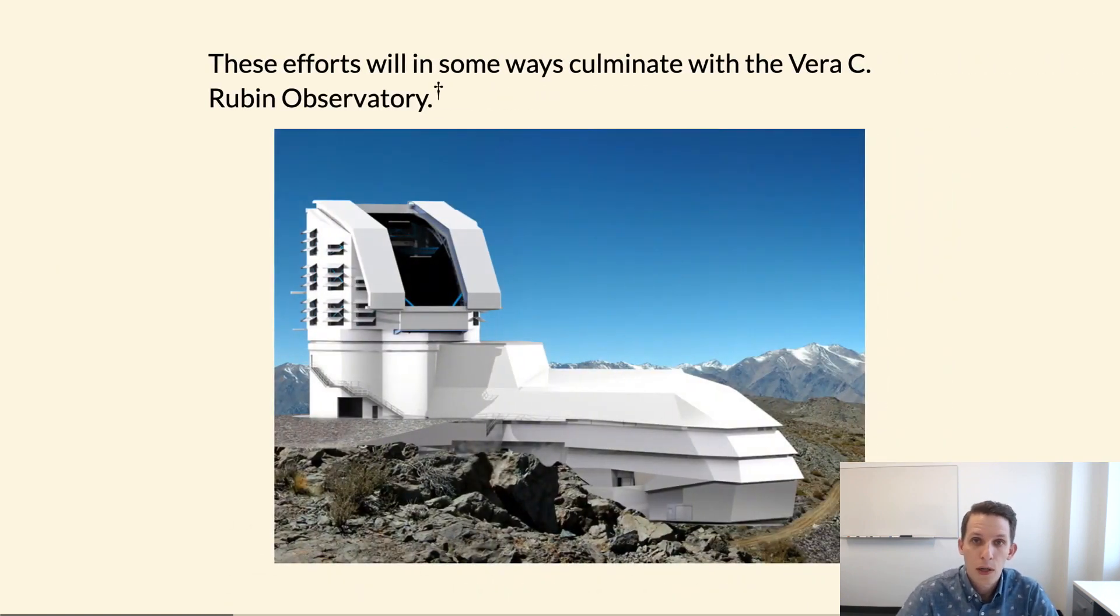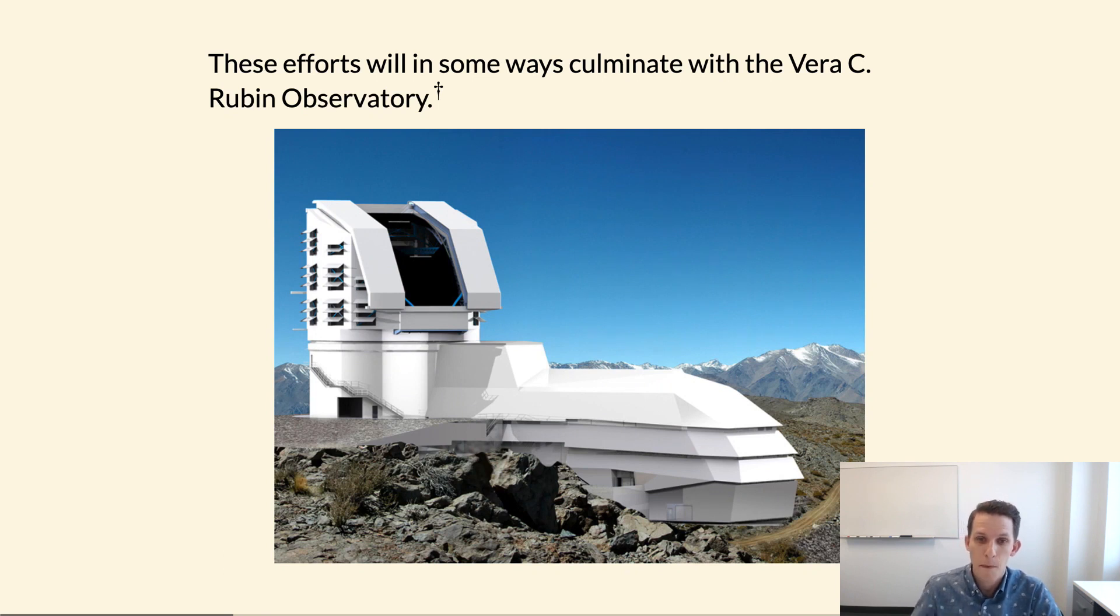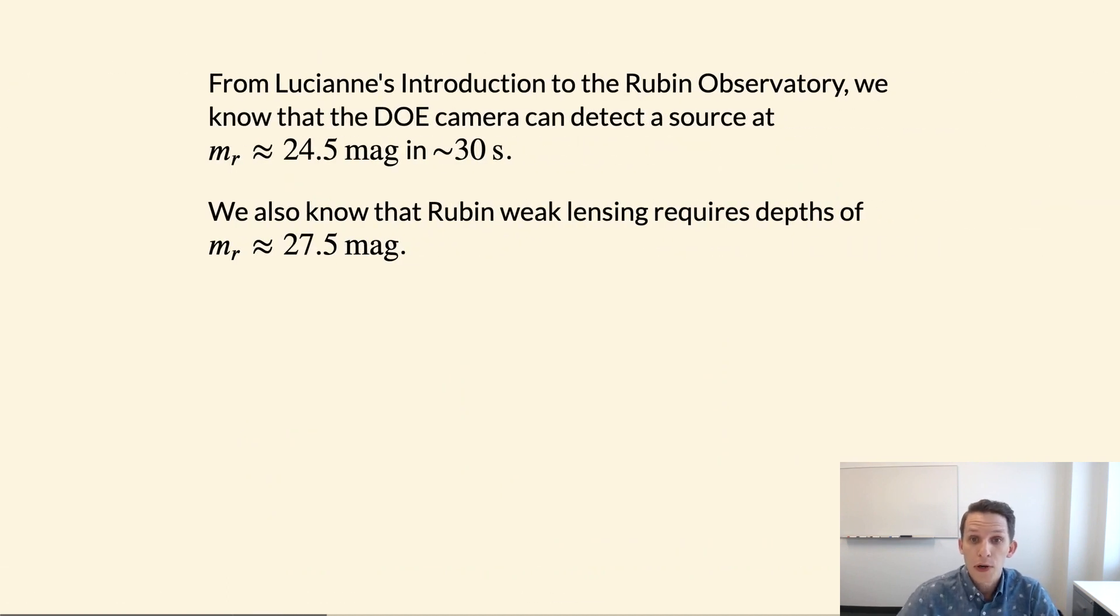All of these efforts will in some ways culminate in the next few years with the onset of the Vera C. Rubin Observatory and its Legacy Survey of Space and Time, or LSST. From Lucianne's introduction to the Rubin Observatory talk, we know that the LSST DOE camera can detect a source at about 24.5 magnitudes in a 30-second exposure.